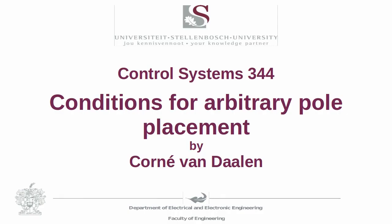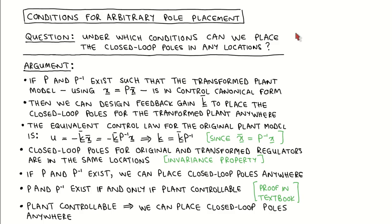If the plant is not in control canonical form, then it's not yet clear whether we can place the closed loop poles anywhere. In today's video we look at the conditions under which we can do this. The main problem we look at is: under which conditions can we design the state feedback gain to place the closed loop poles in any location? We will only look at the argument of the proof, and we do not prove each step of the argument in this video.